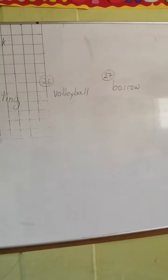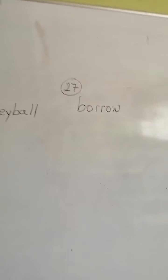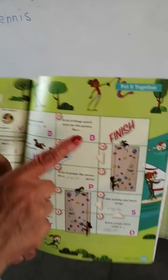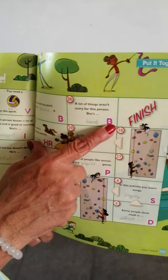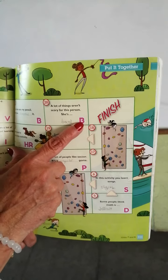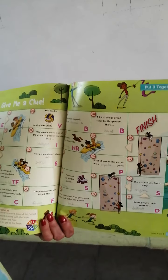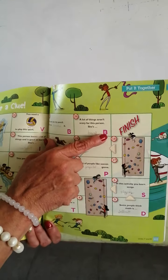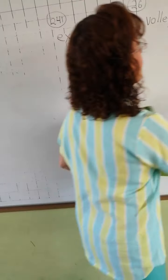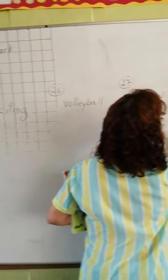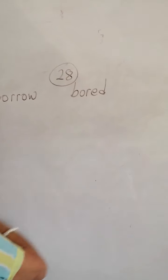Number 28 says: a lot of things aren't scary for this person. She is — starts with B. Muchas cosas no asustan a esta persona. She is... bored? Because it starts with B. Write 'bored' in number 28.